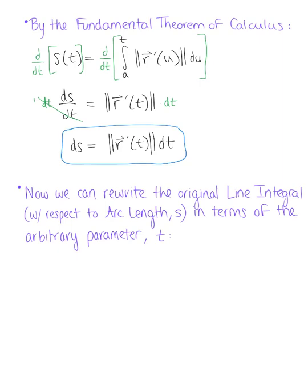Now we can officially rewrite the original line integral with respect to the arc length s in terms of that arbitrary parameter t. So again, we had the line integral over C of f ds, which we rewrote in terms of that arbitrary parameter t. So we had f of x(t), y(t), and then we had that dangerous ds.